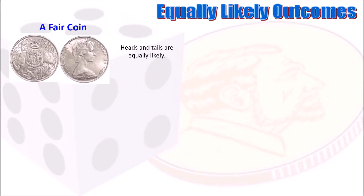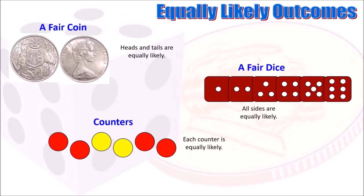What does it mean when we say outcomes are equally likely or not equally likely? When outcomes have the same probability of success, they are said to be equally likely. Some examples are a fair coin, fair dice, and counters of the same shape and size. If you toss a fair coin, the two outcomes — heads or tails — are equally likely because no side of the coin is heavier than the other. Same with the dice: fair dice have equal faces, so no side is heavier.